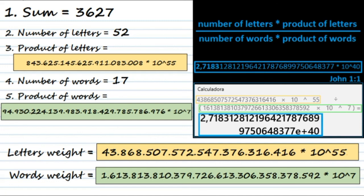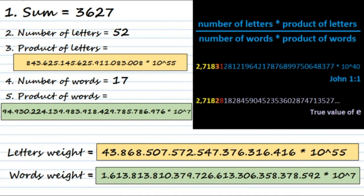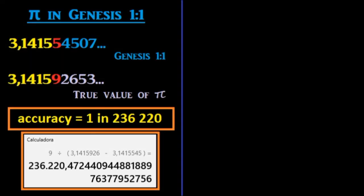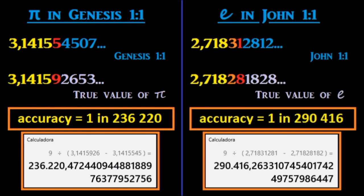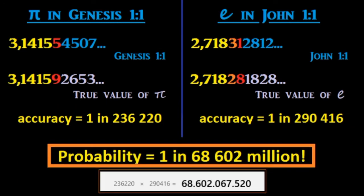This value is very similar to the true value of the number e. John 1:1 yields 2.7183128121..., while the true value of e is 2.7182818284..., indefinitely. Just as we obtained pi to the 5th significant figure from Genesis 1:1, we obtain e to the 5th significant figure from John 1:1 — using the exact same formula. Is this another coincidence? The same formula applied to two verses gives pi for Genesis 1:1 and e for John 1:1.